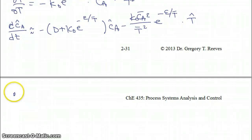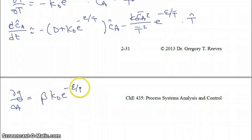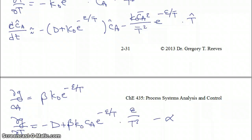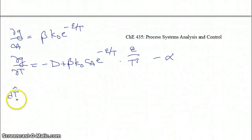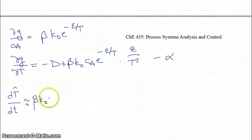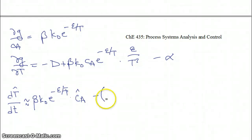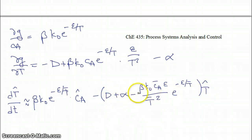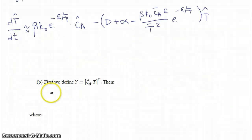We can perform similar calculations for the partial derivatives of the function G. The partial derivative of G with respect to the concentration of A is equal to β·K0·e^(−ε/T). The partial derivative of G with respect to T is equal to minus D plus β·K0·C_A·e^(−ε/T)·(ε/T²) all minus α. Putting all those together gives us our two linearized equations.